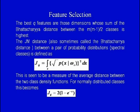The Jeffrey-Matsushita (JM) distance between a pair of probability distributions of spectral classes is defined as Ji = ∫(√p(x|ωi) − √p(x|ωj))² dx, which measures the average distance between the two class density functions. For normally distributed classes, this becomes the JM distance for two classes i and j: JM = 2(1 − e^(−x)), where the value ranges between 0 and 2. On the basis of this, the distance between two classes can be determined.